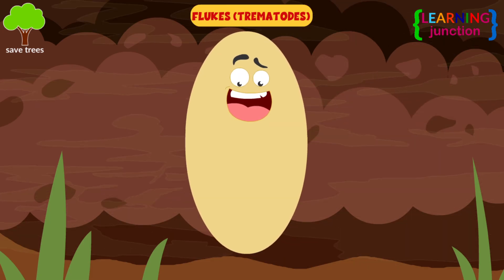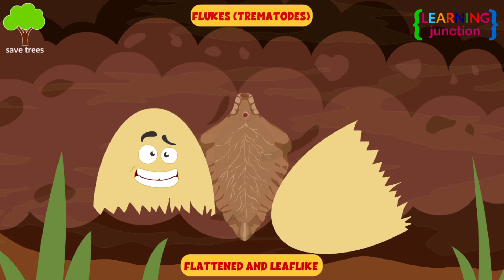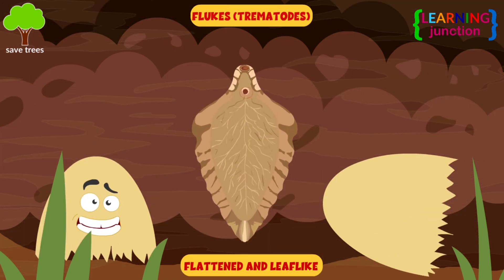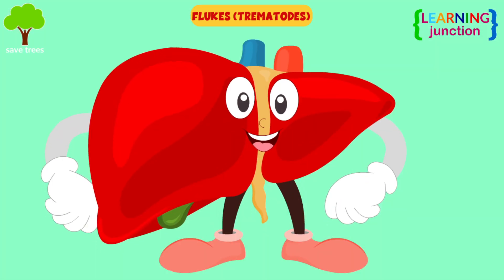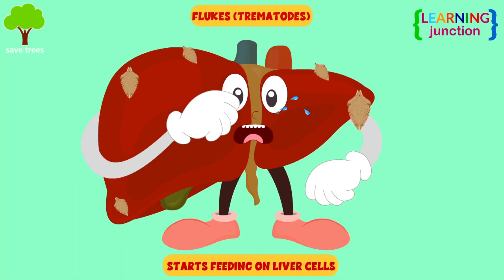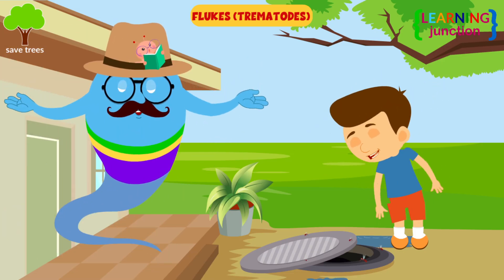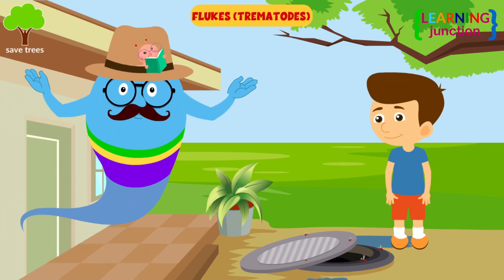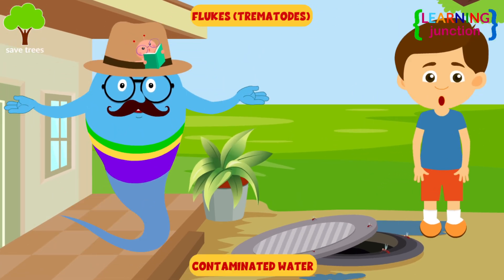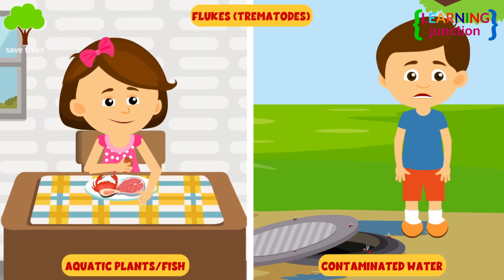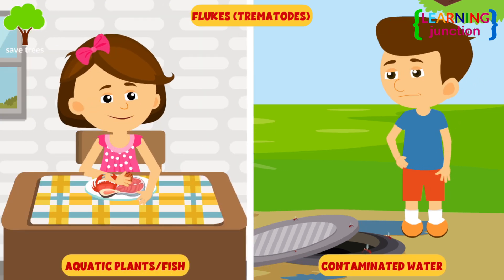Flukes. Most of the flukes are flattened and leaf-like. It enters the liver and the parasite starts feeding on liver cells. You can get a fluke infection from coming into contact with contaminated water or eating infected aquatic plants or fish.